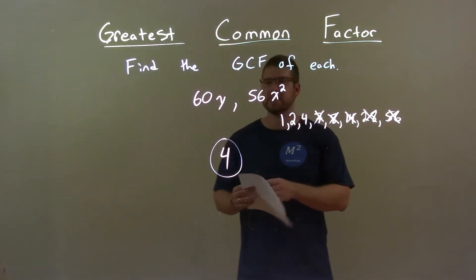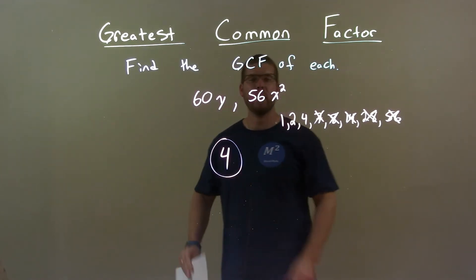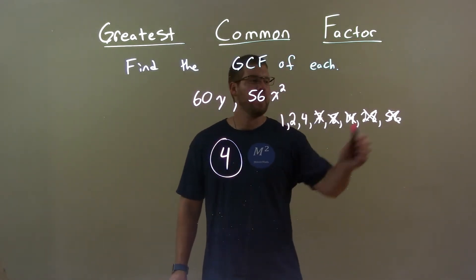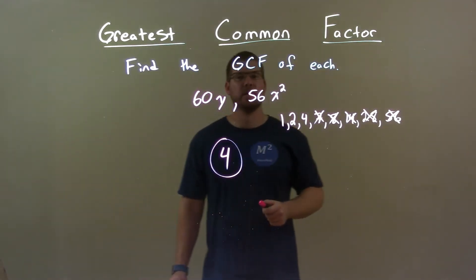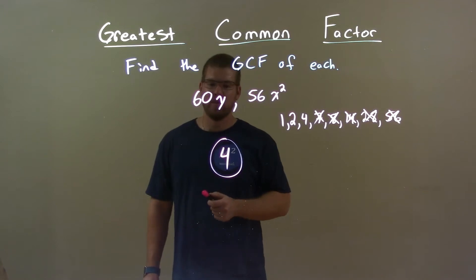Quick recap: we're given 60y and 56x squared and we have to find the greatest common factor of these two. Well, we found all the factors of 56, and 4 was the largest one that also went evenly into 60. These two numbers don't share any variables, so my final answer is just the number 4.